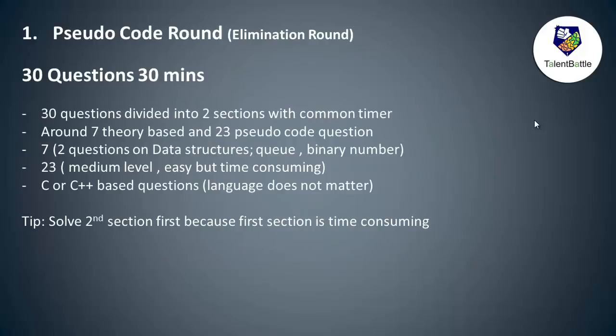The first round is the pseudo code round, which is an elimination round. It has 30 questions and 30 minutes. These 30 questions are divided into two sections with a common timer. Out of these, seven are theory-based MCQs and 23 are pseudo code questions. The seven theory questions include topics like basics of queues and binary numbers from data structures.